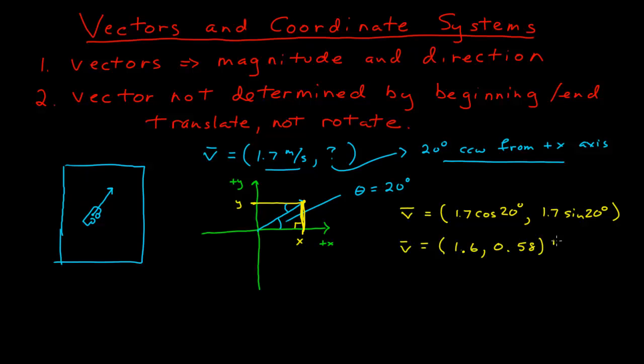And this is still a velocity, so it has units of meters per second. These two numbers, now, uniquely represent the magnitude and direction of this vector, so let's look at another one.